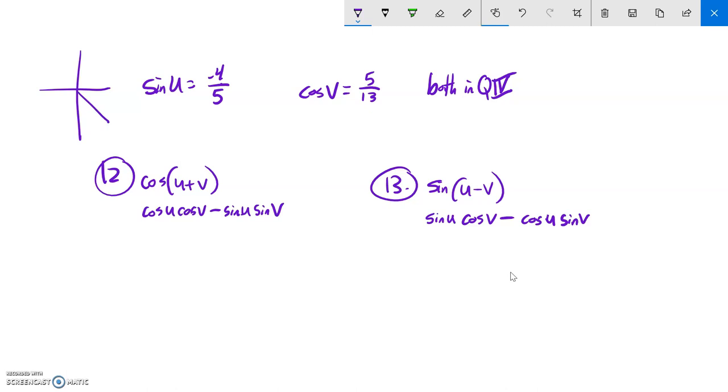Quadrant 4. So sine is negative four-fifths, so this is negative 4, and this is 5. And I'm going to need that value to get the cosine of u. And I could do Pythagorean theorem for it. I know that it's going to be square root of 5 squared minus negative 4 squared, and that's going to end up being a positive 3. And it's going in the positive direction, so 3. So cosine is three-fifths.